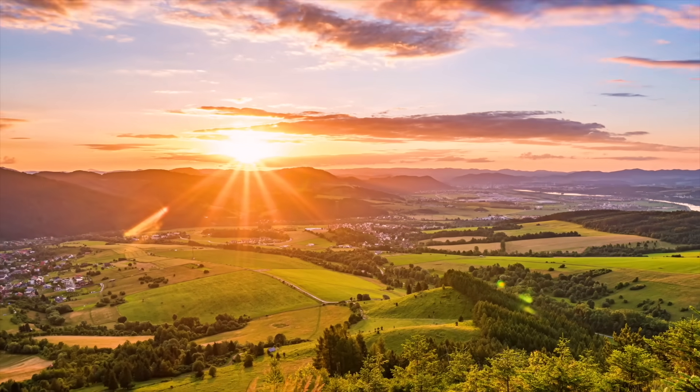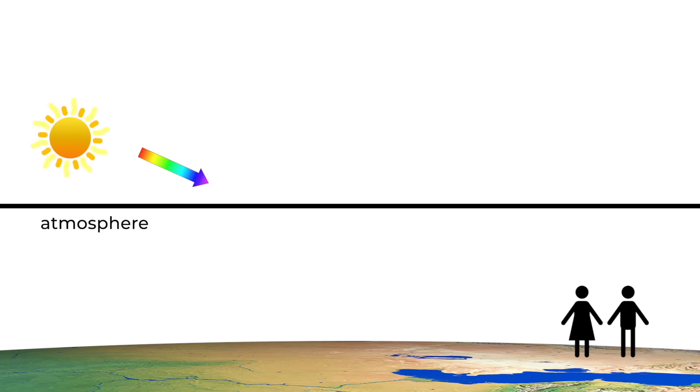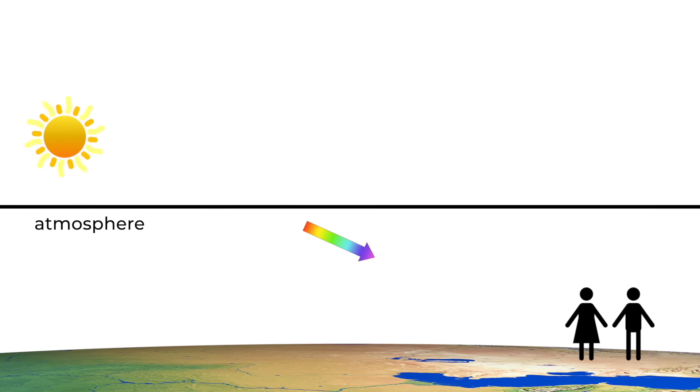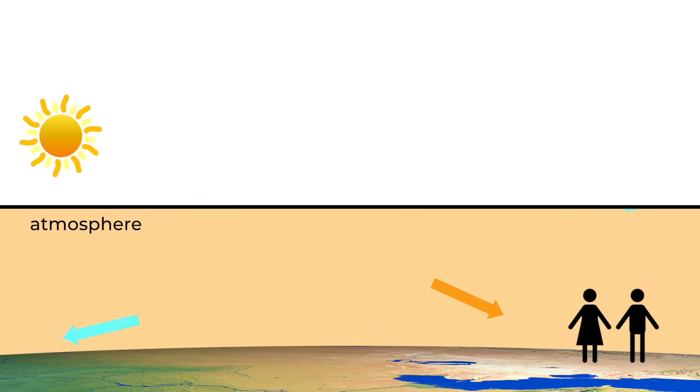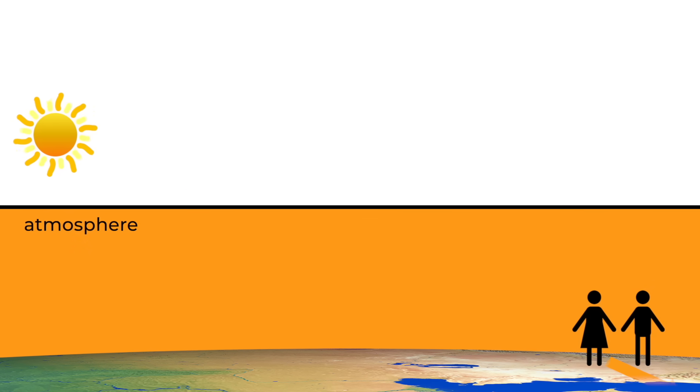Rayleigh scattering also explains why sunrises and sunsets can be so spectacularly red. When the sun is on the horizon, the light has to pass through a lot of air before it gets to your eyes. That means that even more blue light than usual is scattered, leaving preferentially the red and oranges for you to see.